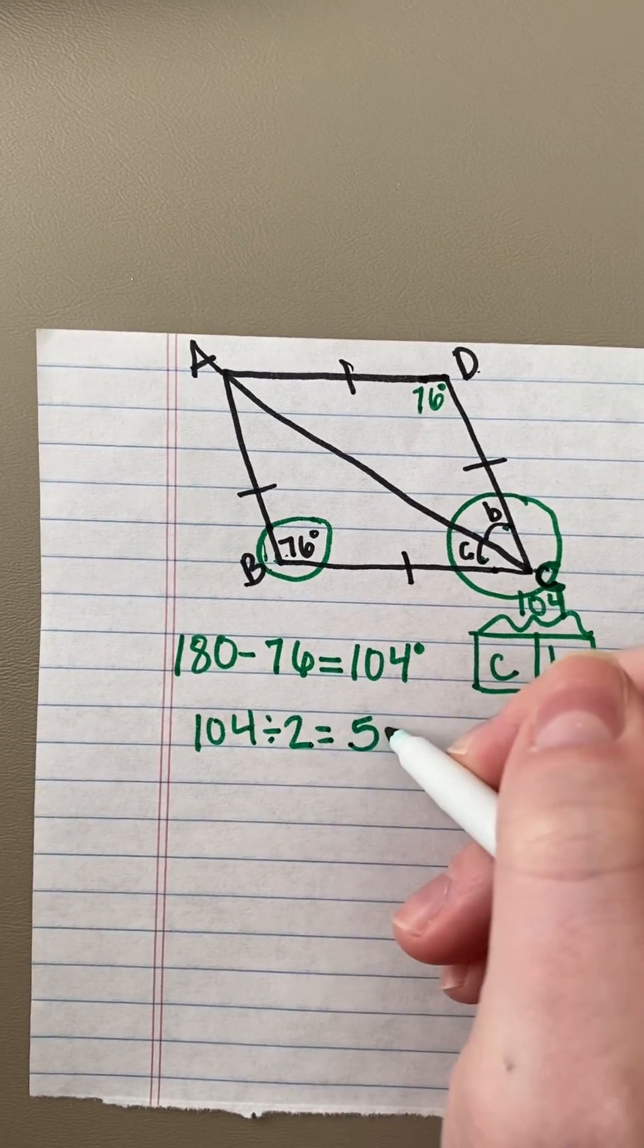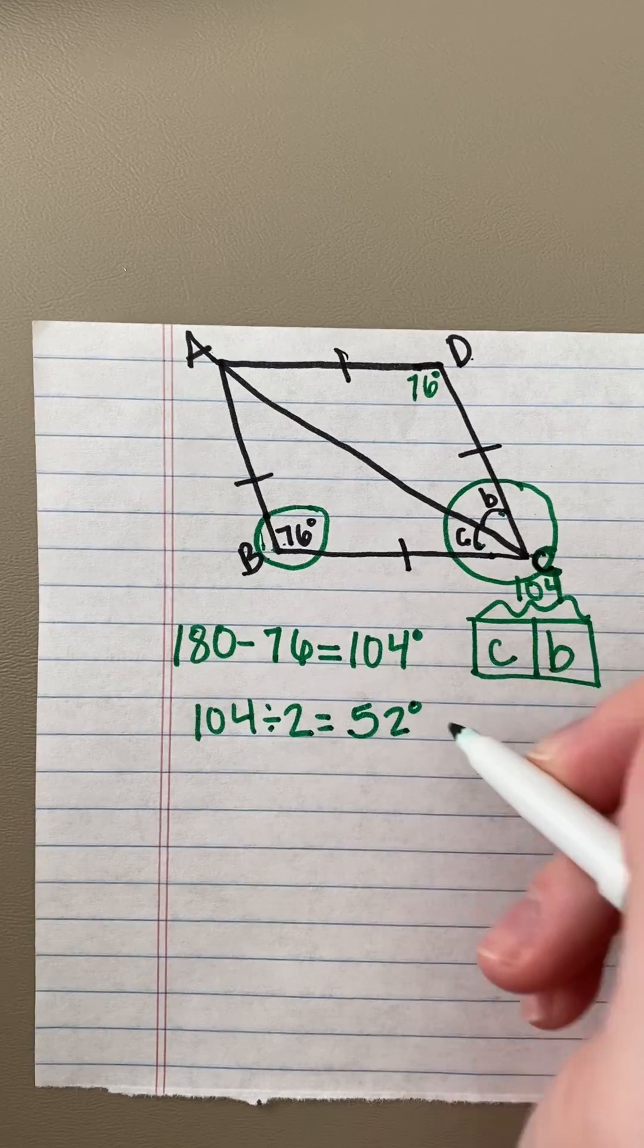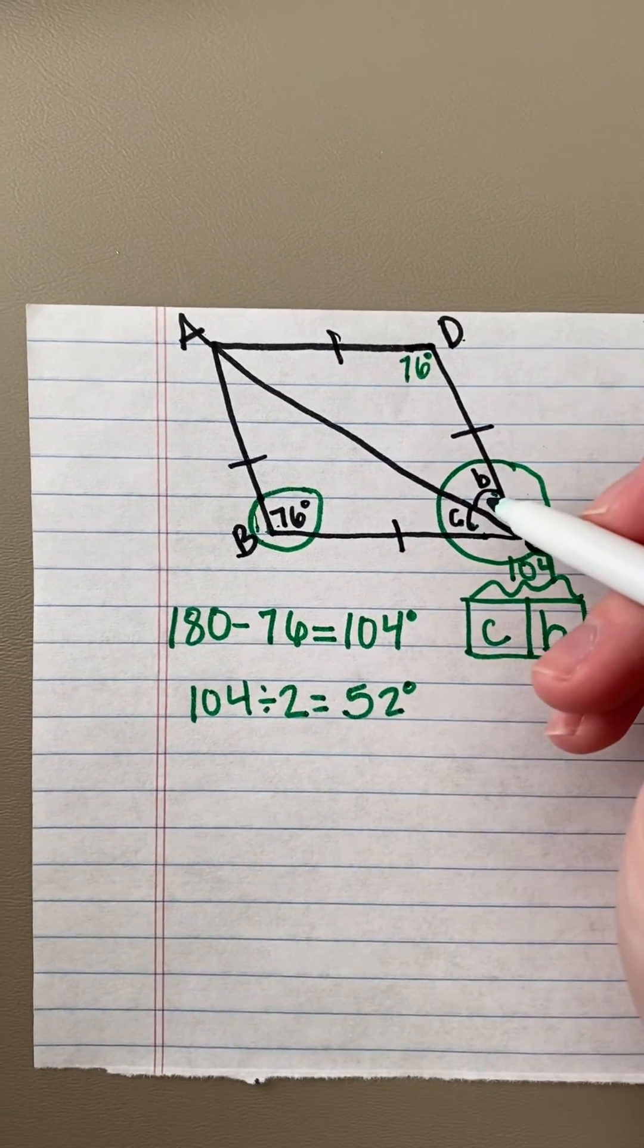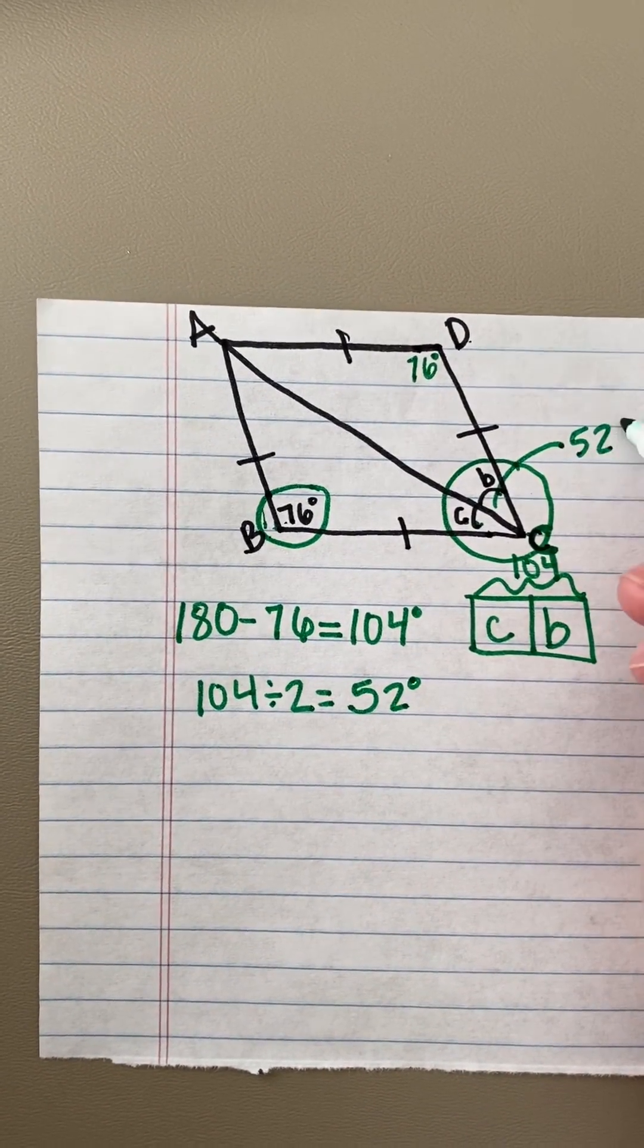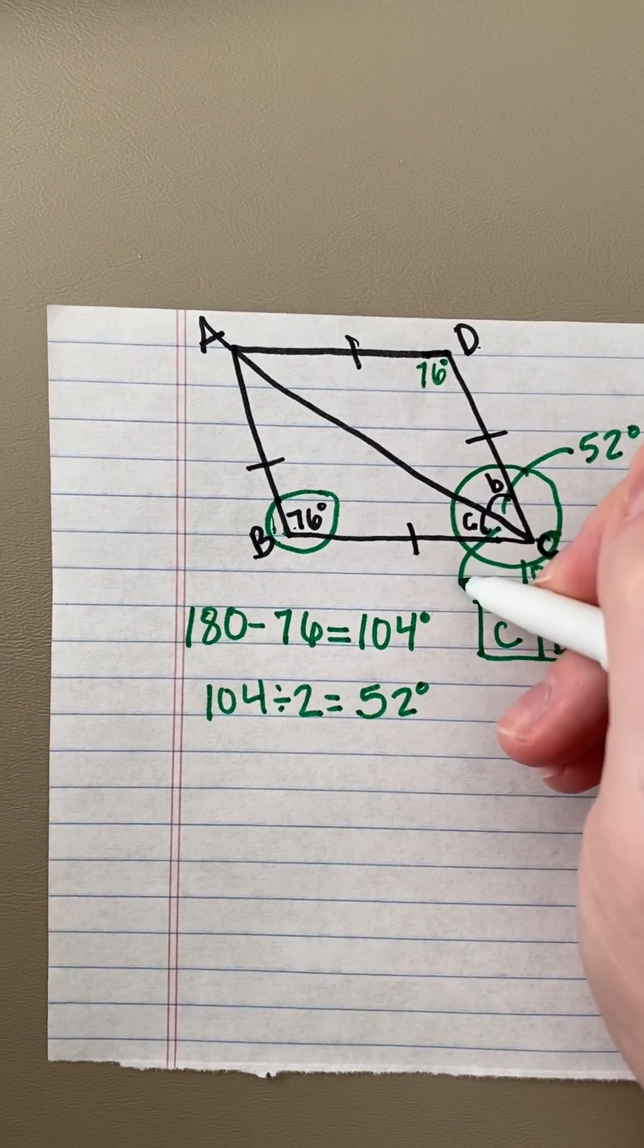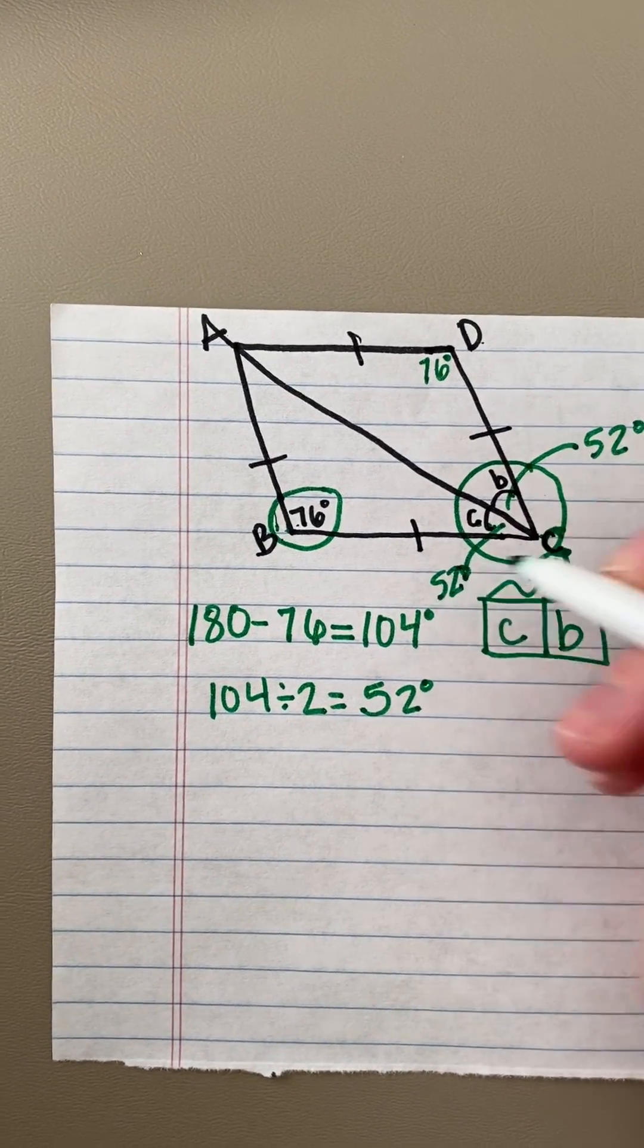And when I do that, I get 52 degrees. So the measurement of angle B is 52 degrees, and the measurement of this lowercase C angle is 52 degrees.